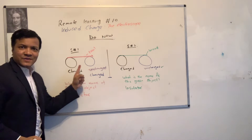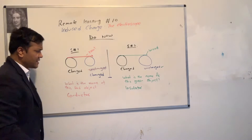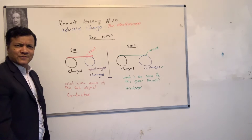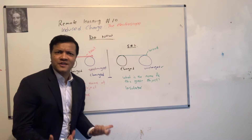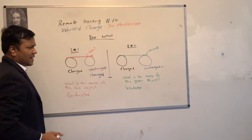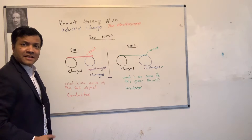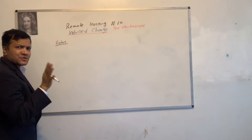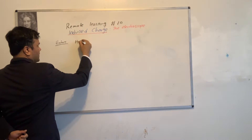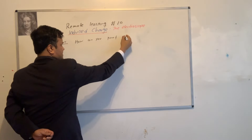Electrons can transfer through the conductor, that's why the blue one became charged. Electrons, however, cannot transfer through an insulator — that's why the blue one remained uncharged. So we know that there are charges, but how do you prove it? How can you prove that charges exist?